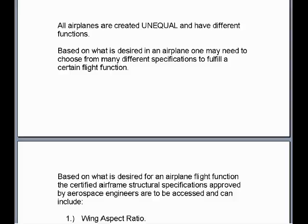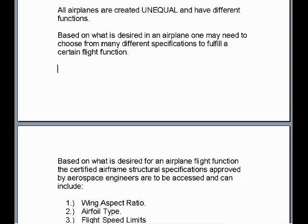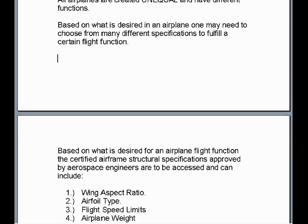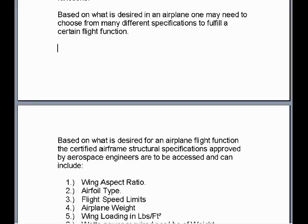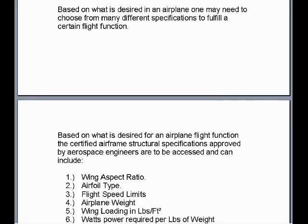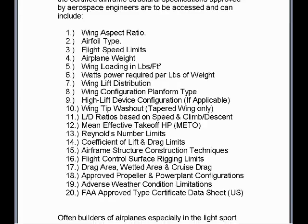Based on what is desired for an airplane flight function, the certified airframe structural specifications approved by aerospace engineers are to be accessed and can include: Wing aspect ratio, airfoil type, flight speed limits, airplane weight, wing loading in pounds per square foot, watts power required per pound of weight, wing lift distribution, wing configuration planform type, and high lift device configuration if applicable.